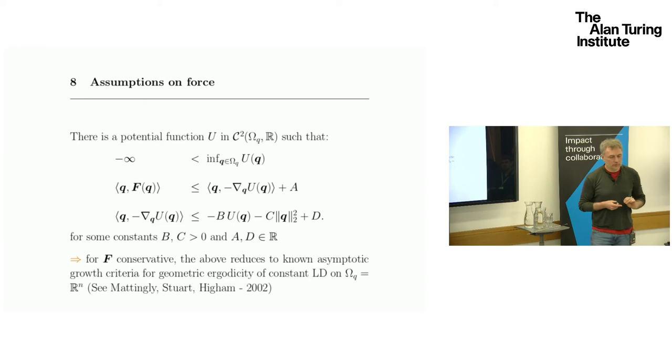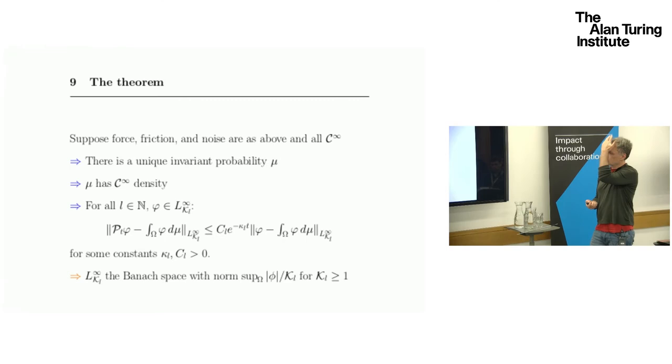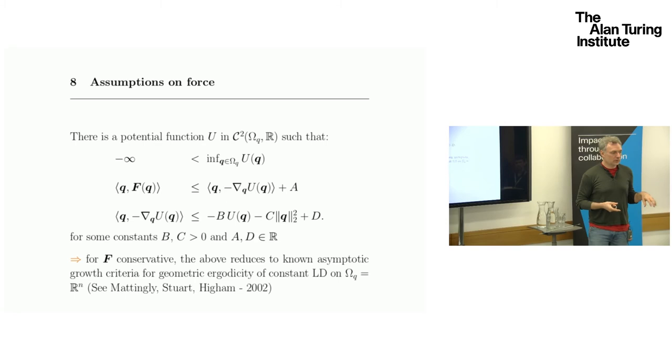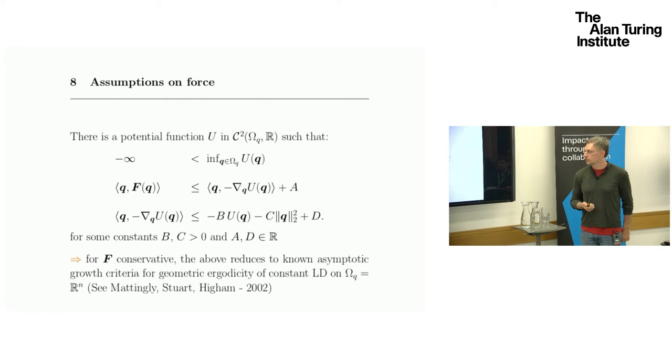This is related to the contractivity of the generator or the embedded Markov chain. If you simplify all the assumptions and you get rid of the position dependency, you find exactly the conditions in the reference paper from Jonathan. To write this, to understand why this is coming from, you have to know how to write the infinitesimal generator of the Langevin dynamics and then the Harris condition.